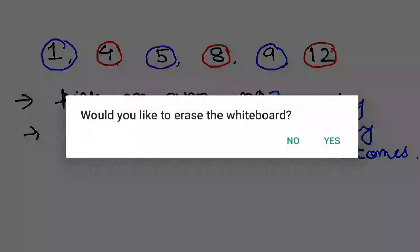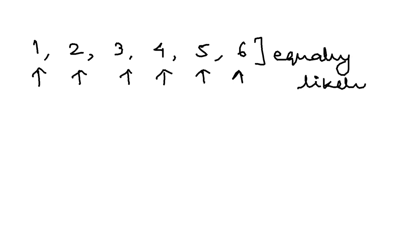Let us take one more example. Let's say there is a dice with numbers 1, 2, 3, 4, 5, and 6. The chance of getting 1, getting 2, getting 3, getting 4, getting 5, getting 6 are all equal. So this is a case of equally likely outcomes.